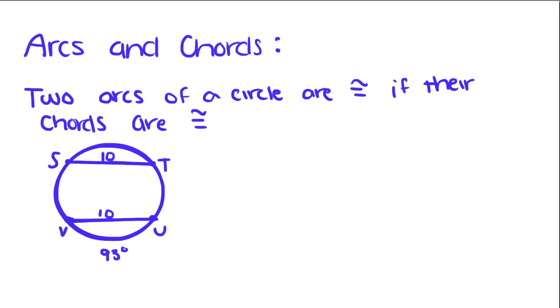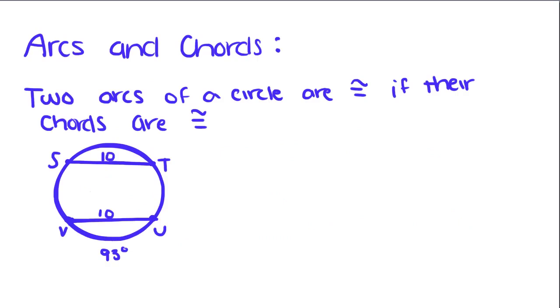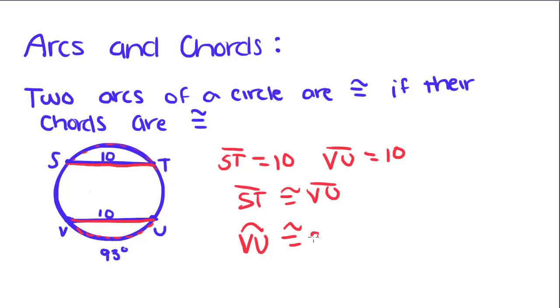Two arcs of a circle are congruent if their chords are congruent. This is like the other one, it's just the contrapositive of it. These two chords ST equals 10 and VU equals 10. That means chord ST is congruent to chord VU, so that means that arc VU is congruent to arc ST.